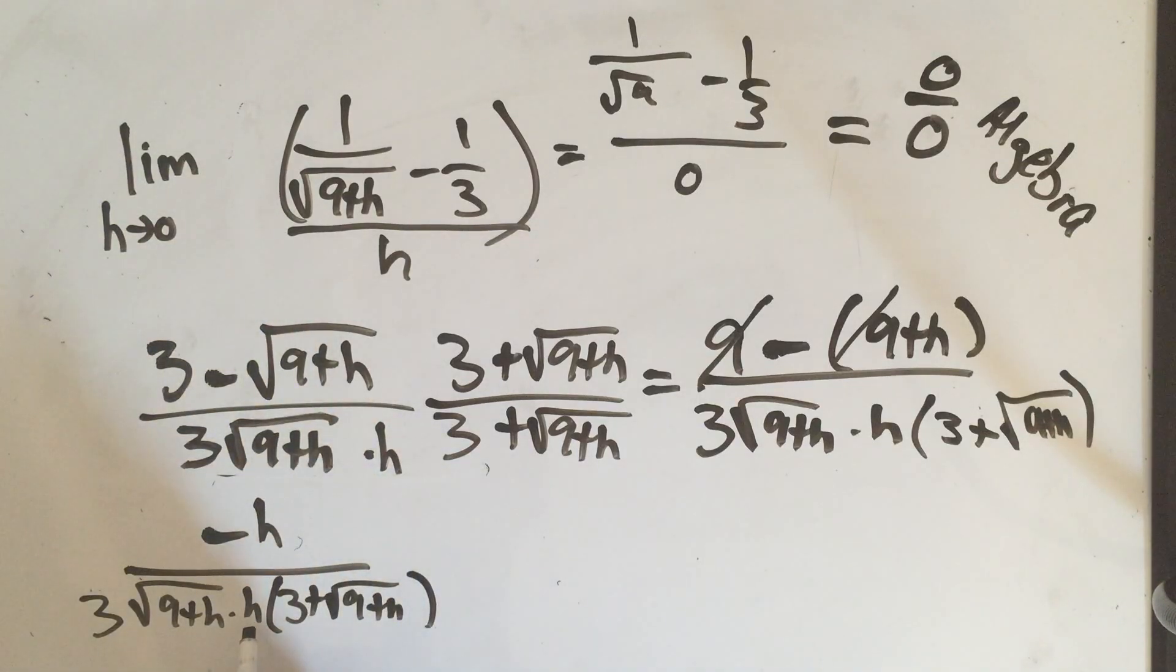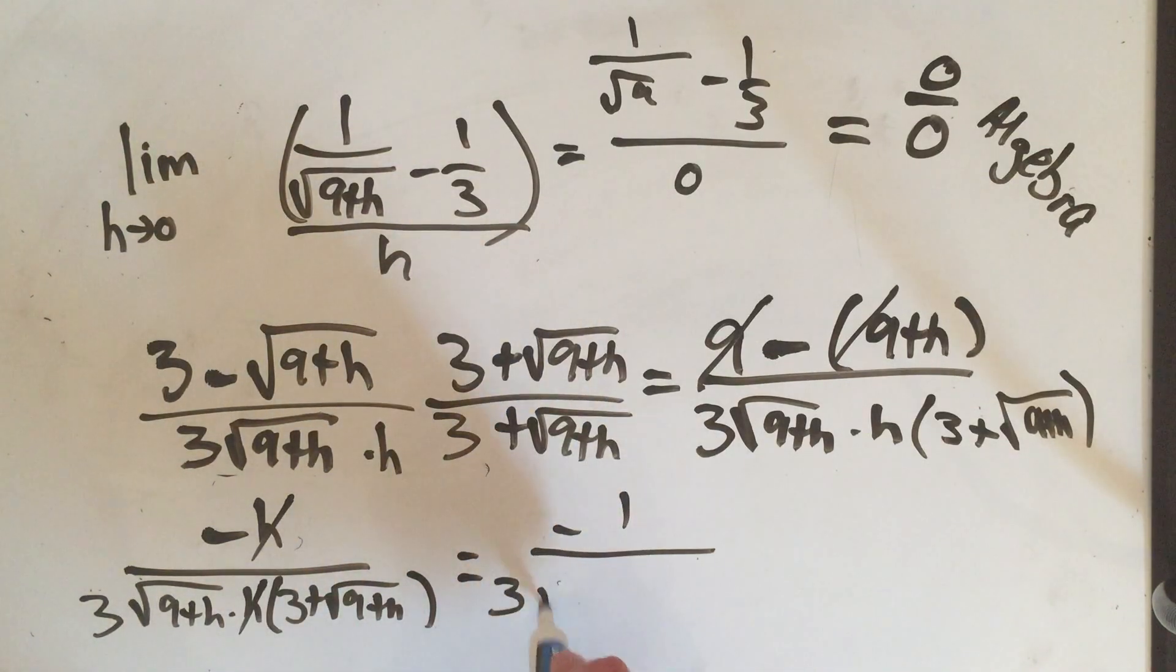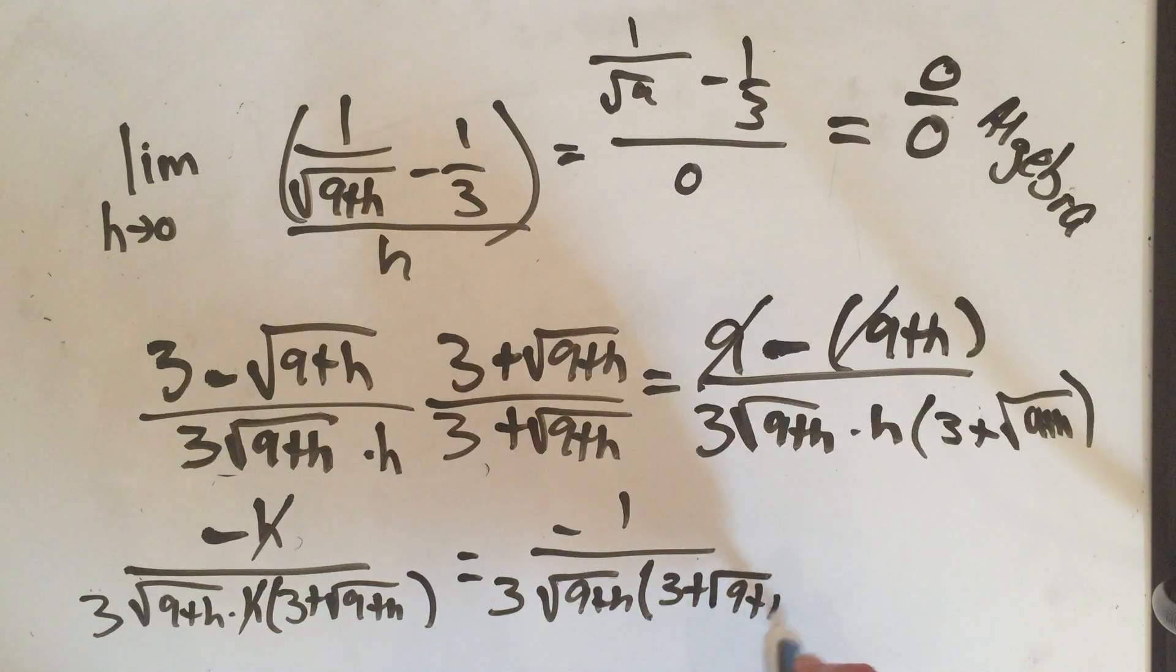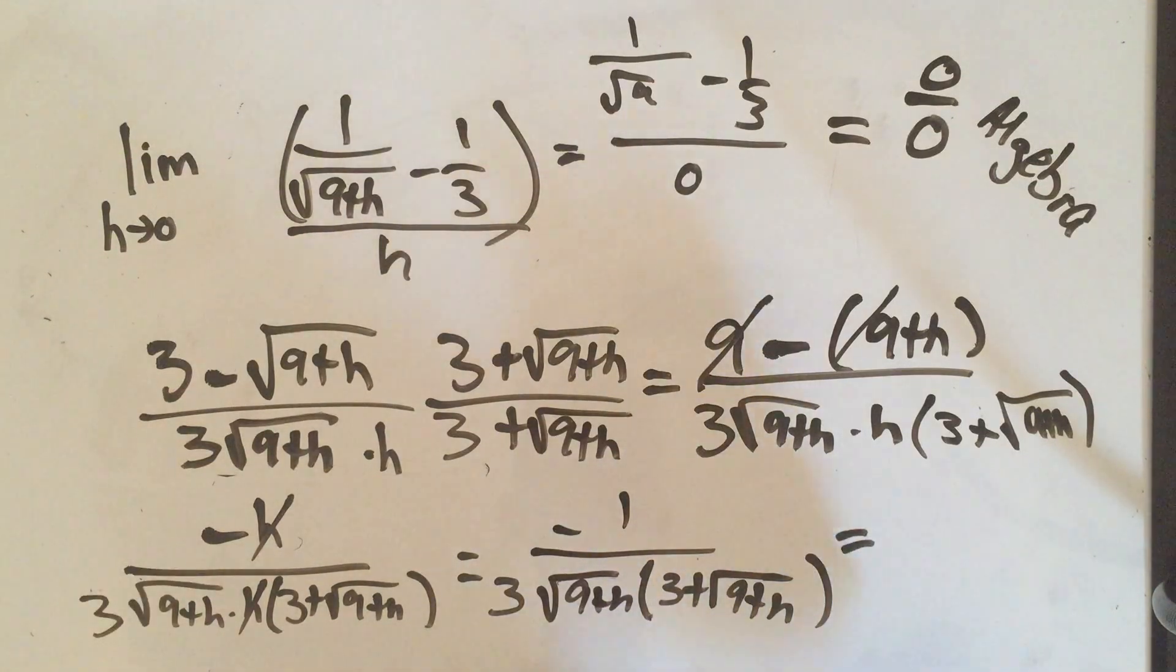And now that this h is being multiplied by everything, I can cancel it on top. And I get a minus 1, 3 square root of 9 plus h times 3 plus square root of 9 plus h. And when I cancel that h in the bottom, I can plug in my limit. I can evaluate h equals 0.